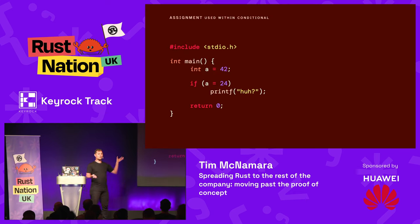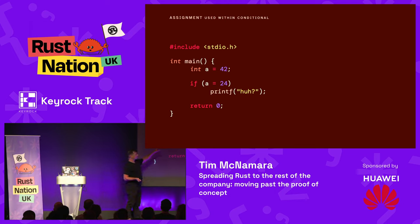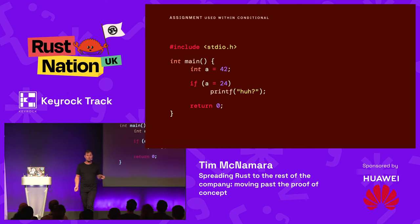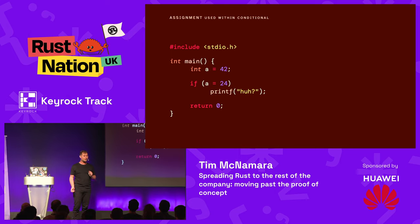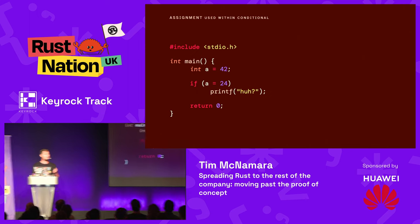We don't need programming languages like this anymore. Here is a program that you can't write in Rust — this is C. Spot the bug. I made this mistake many times when I was learning Python: I used assignment when I should have used equality. Rust will refuse to compile this. Rust is pedantic. Rust will make you think.